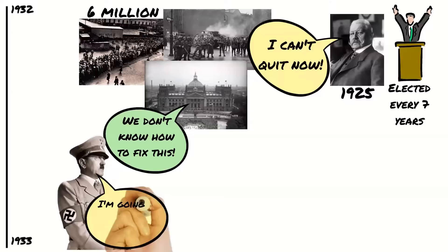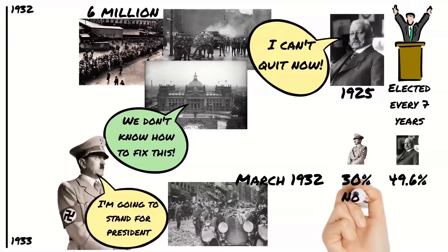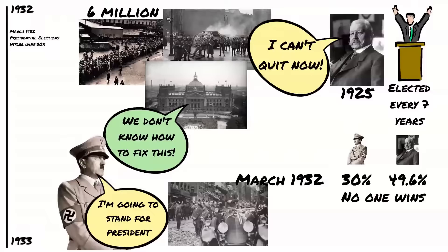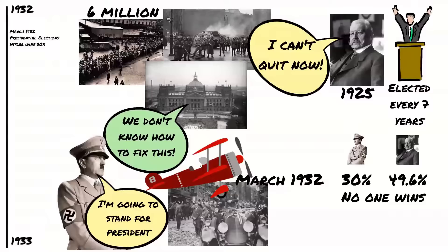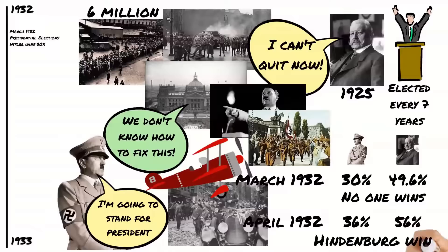Hitler stood against Hindenburg and the campaign was nasty and sometimes violent. When the results came in, Hitler had won 30% of the vote while von Hindenburg had won 49.6%. Unfortunately no candidate had won the required 50%, so another election had to be held. Hitler went on the campaign trail again, hiring an aeroplane to travel around Germany giving speeches. The SA went on a full offensive, breaking up opposition meetings, fighting in the streets and marching. When the results came in, Hitler had increased his vote to 36%, but von Hindenburg had also increased his to 56%, mostly taking votes from the communist candidate Ernst Thalmann. Von Hindenburg was declared the winner.